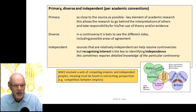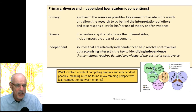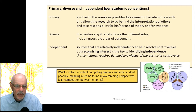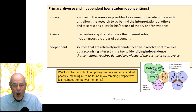This is different from the Wikipedia approach, which uses only secondary sources — reliable media such as the New York Times and Washington Post — and that buries the spin already embedded in the narrative. Regarding diverse sources: in a controversy, it's better to see different sides, including possible areas of agreement. If there is agreement across opposing interests, it starts to reinforce that there may be common ground. Independent sources can help resolve controversies, but that requires recognizing interest — who has an interest in what they're talking about — and that sometimes requires detailed knowledge of a particular controversy.